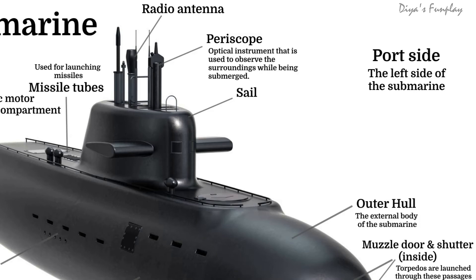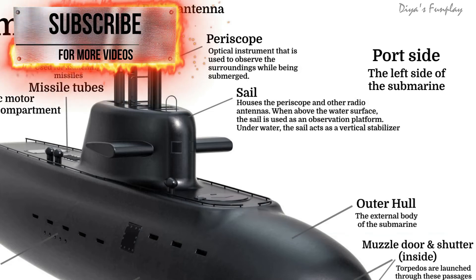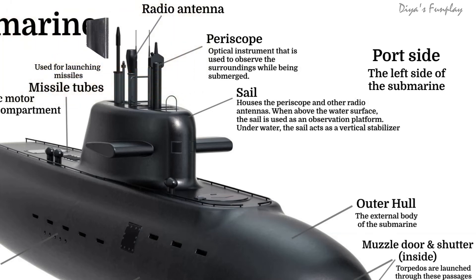Sail. This structure houses the periscope and other radio antennas. When above the water surface, the sail is used as an observation platform. Underwater, the sail acts as a vertical stabilizer.